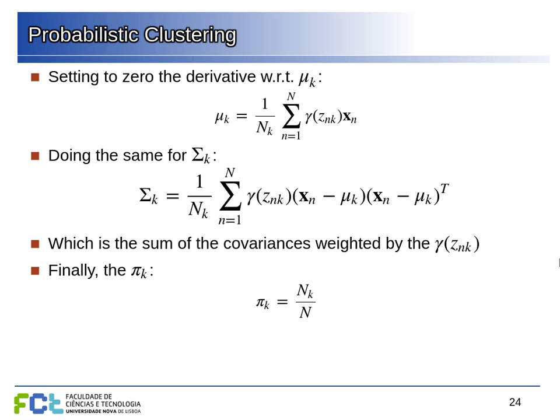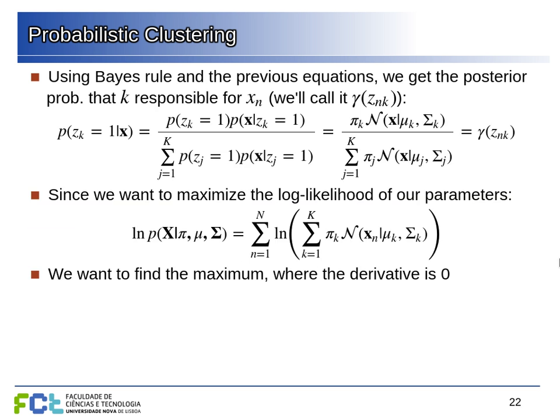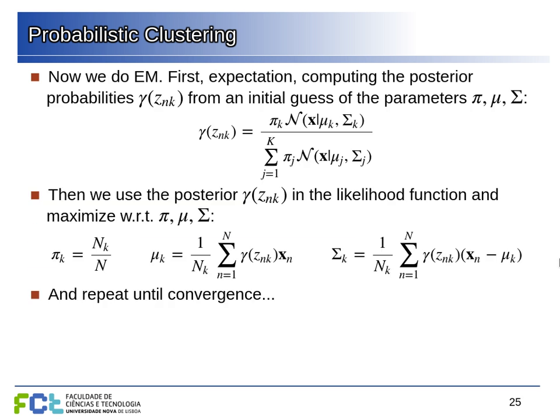The weight pi_k of each Gaussian in the final mixture is simply the effective number of points N_k divided by the total number of points — so if a Gaussian gets half the probability it contributes half to the mixture. If we have the z values we can compute the parameters at the likelihood maximum, and if we have these parameters we can estimate the z values. This is the expectation-maximization algorithm; previous examples like k-means used the same general idea but were not formally EM because they did not deal with probability.